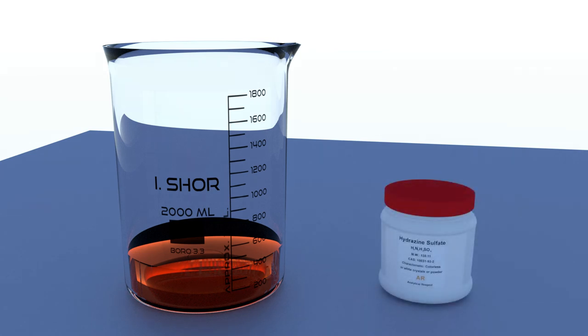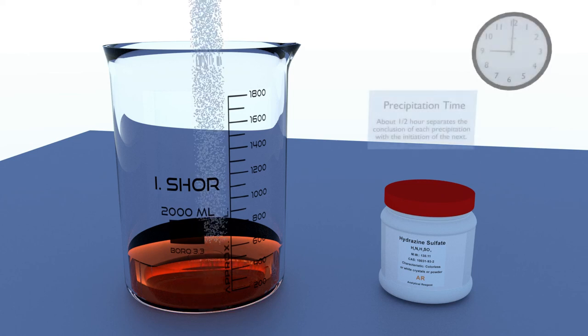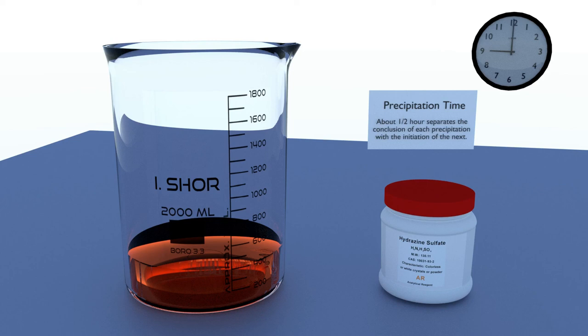Add hydrazine. The amount required is the same as the total weight of your platinum group metals. The various platinum metals - platinum, palladium, rhodium, iridium, and so on - will precipitate in different time frames, with about one half hour separating the conclusion of each precipitation with the initiation of the next. Recover each PGM at the conclusion of each precipitation, then set aside.